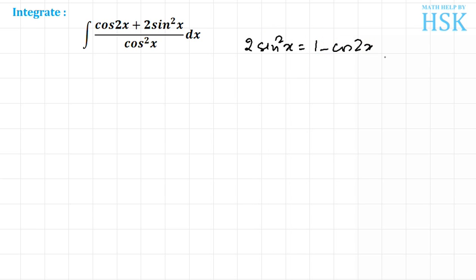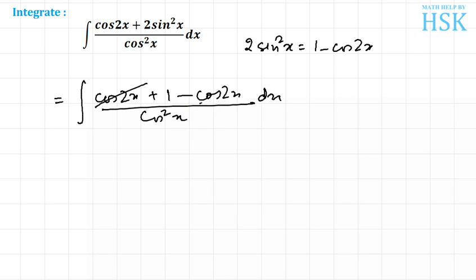On writing this 2 sine squared x as 1 minus cos 2x, I get this as cos 2x as it is, plus 1 minus cos 2x upon cos squared x. So this cos 2x and cos 2x cancels out.